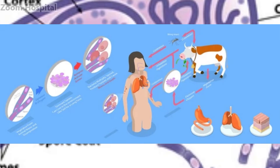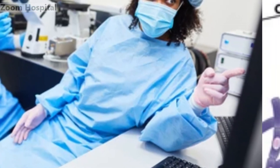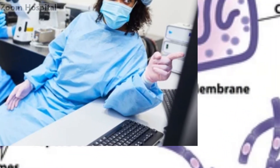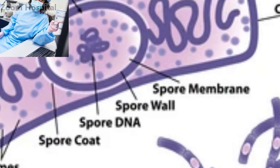6. Public health surveillance. Government authorities should maintain strong surveillance systems to detect anthrax outbreaks promptly. Timely reporting and effective containment measures are essential to prevent the spread of the disease.